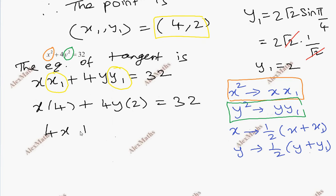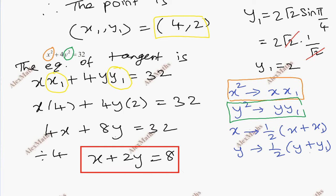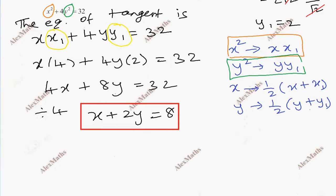4x + 8y = 32. Divided by 4: x + 2y = 8, equation of tangent.